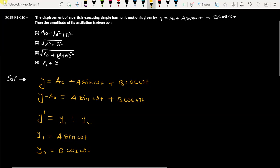If you talk about phase difference between y₁ and y₂, that is π by 2, because we have a sin ωt and we have b cos ωt. So phase difference between sin and cos is π by 2.